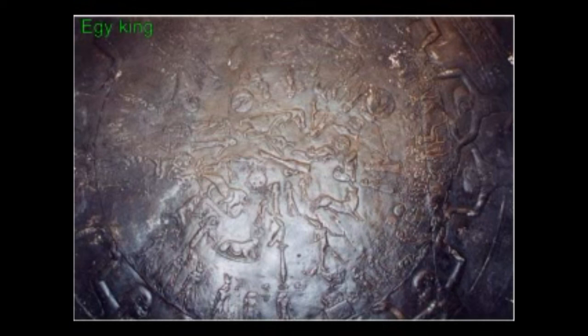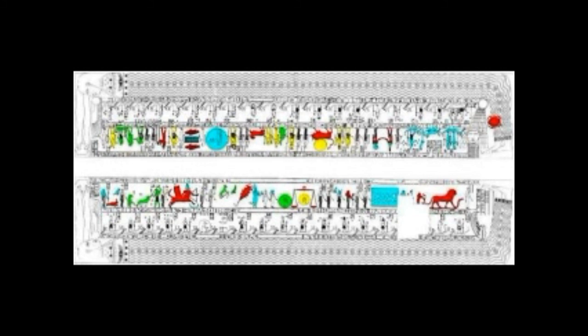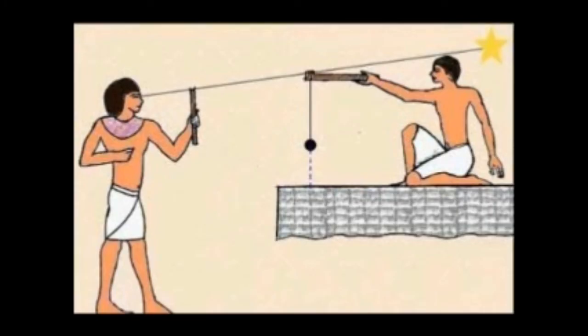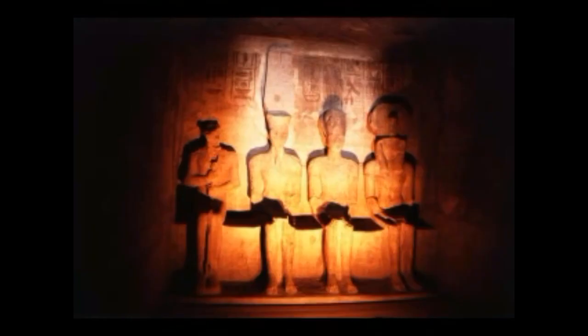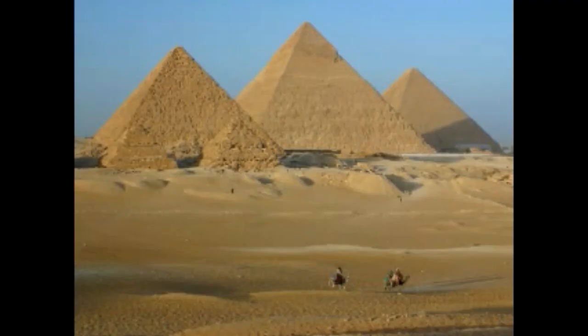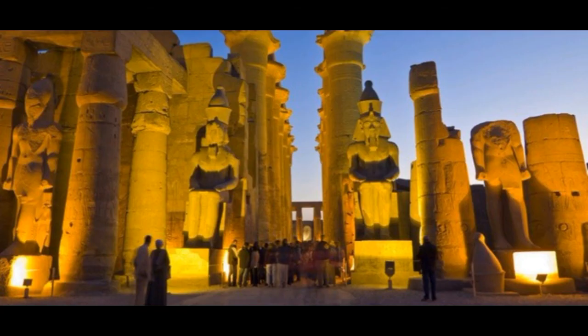The Egyptians noted that the first reappearance of Sopdet — the heliacal rising after a period of 70 days of invisibility — always came just days before the start of the annual Nile flood. This enabled the ancient Egyptians to predict the coming of the flood. Akhet literally means flood, and the heliacal rising of Sopdet marked the beginning of Akhet and the New Year.